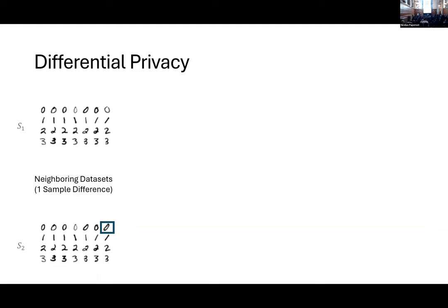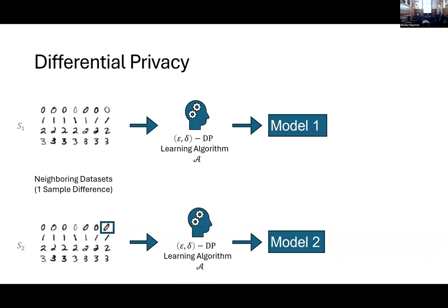Suppose we have two different data sets that differ only for one sample. Then what we want to do is apply an epsilon-delta differentially private algorithm, and the differential privacy guarantees basically tell us that the models that come out of the learning algorithm are going to be indistinguishable.